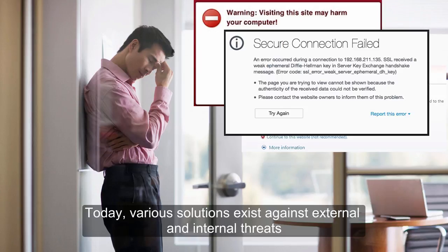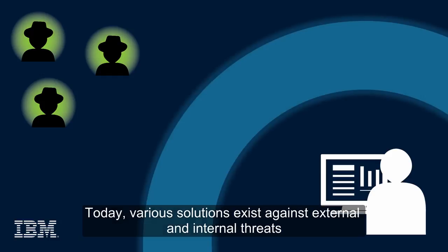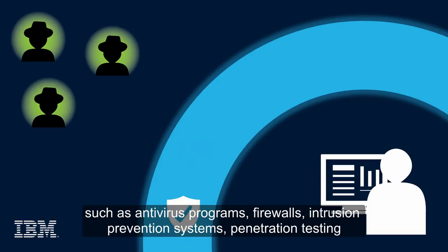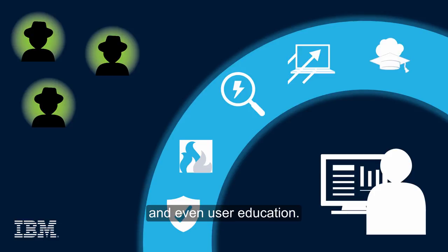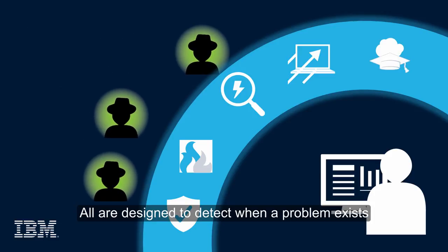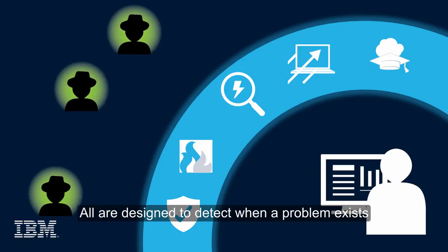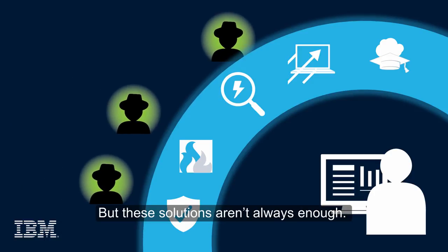Today, various solutions exist against external and internal threats, such as antivirus programs, firewalls, intrusion prevention systems, penetration testing, and even user education. All are designed to detect when a problem exists or prevent further damage once a breach has been detected, but these solutions aren't always enough.